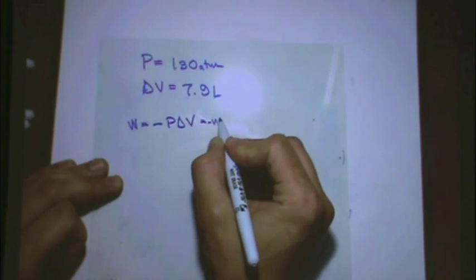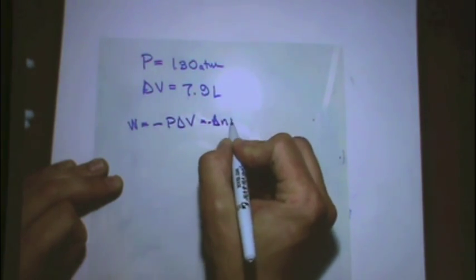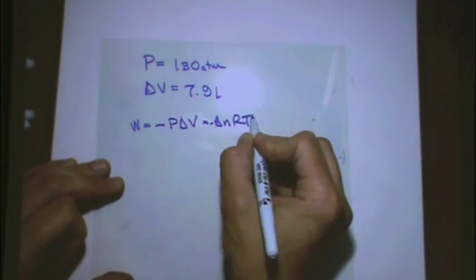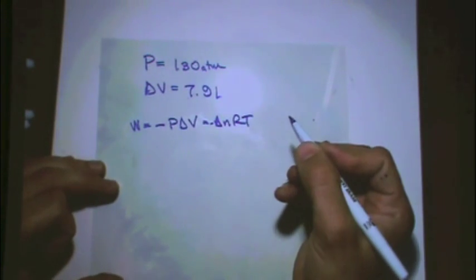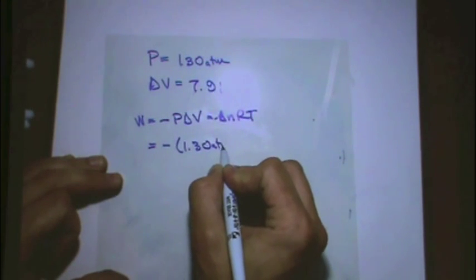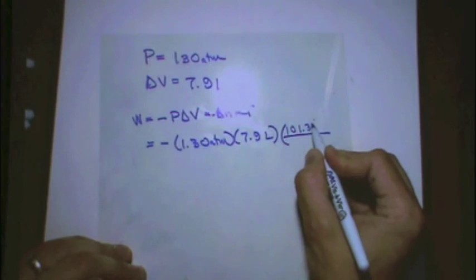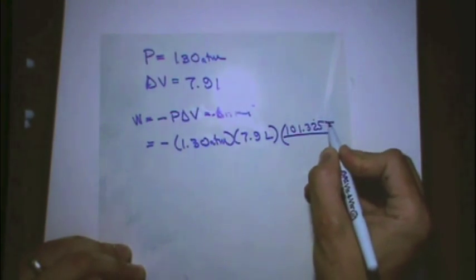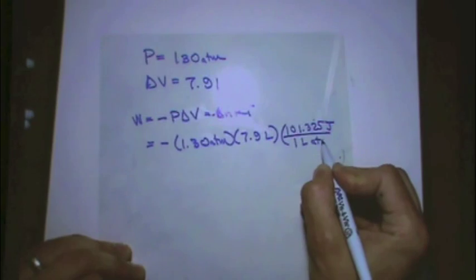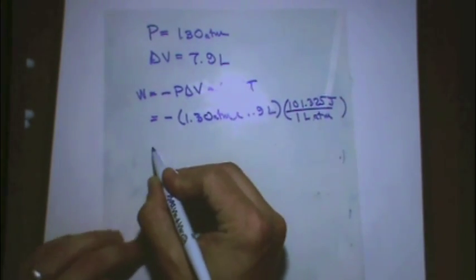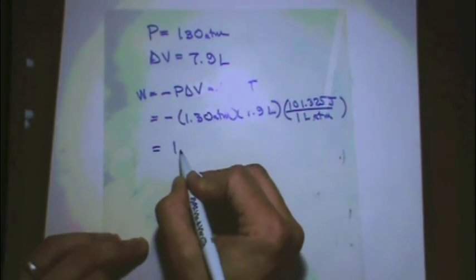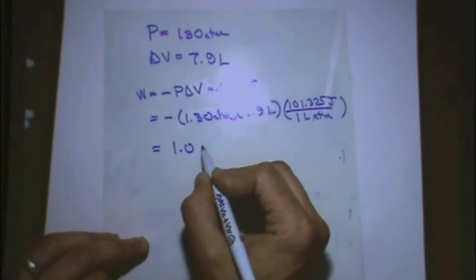And not minus delta NRT, because you don't have N or T. So you'd say minus P, 1.30 atm, times delta V, 7.9, and then you would just convert, it's 101.325 joules per 1 liter atmosphere. And in this case, I got 1.0 kilojoules.